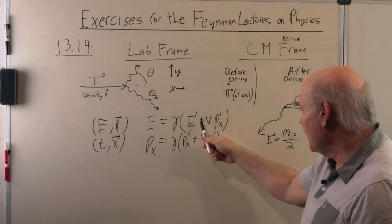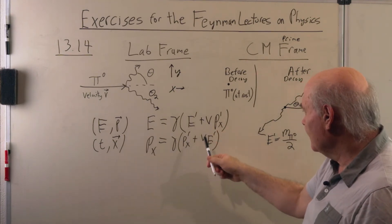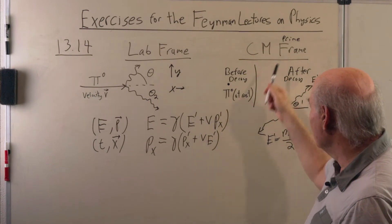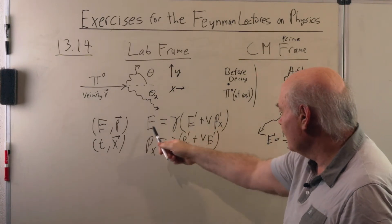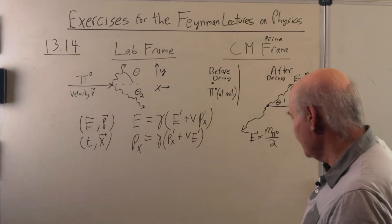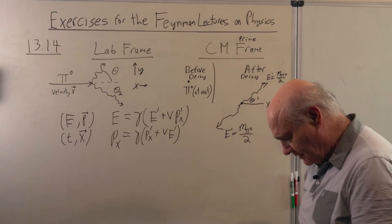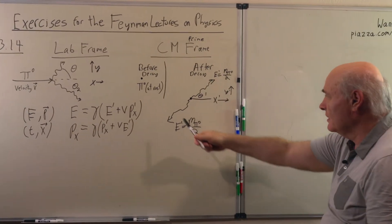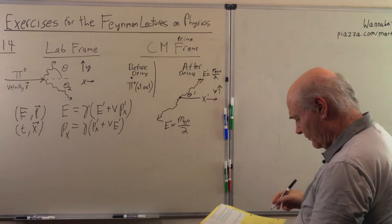The plus signs are because we're going from the prime frame — the moving frame — to the rest frame, the lab frame. Now let's set up our equations using these transformations.